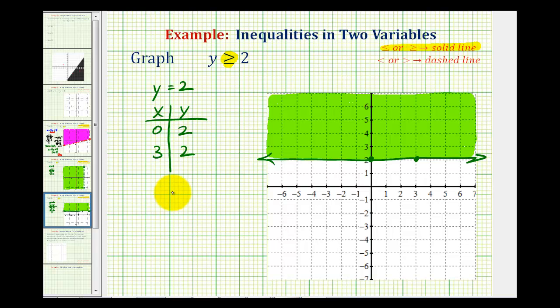Our graph indicates that every point on the line or in the shaded region has an ordered pair that would satisfy the inequality. And every point in the non-shaded region has an ordered pair that would not satisfy the given inequality of y is greater than or equal to positive 2.